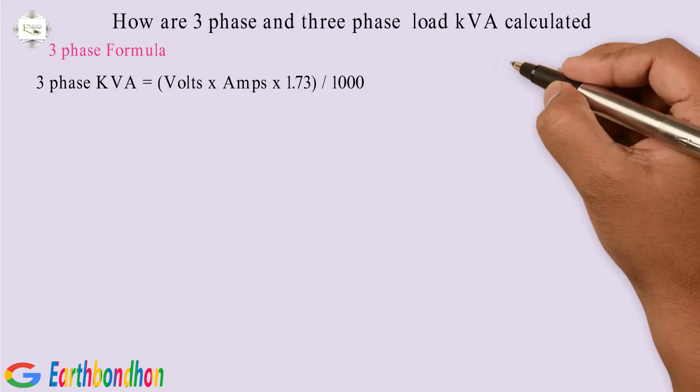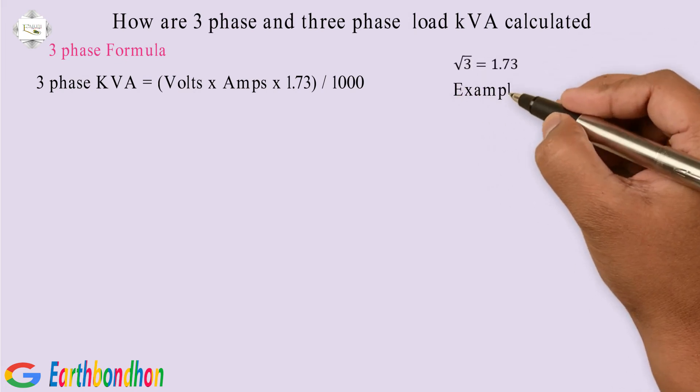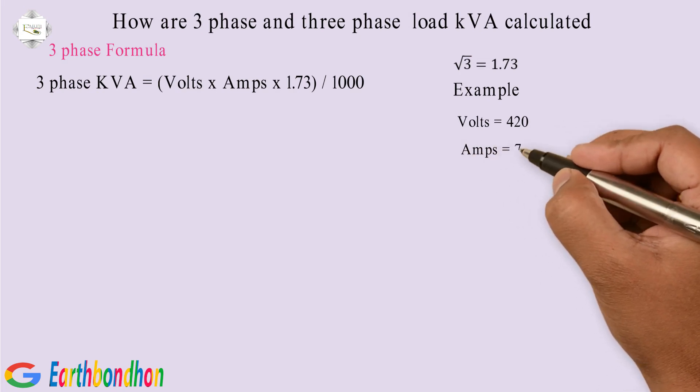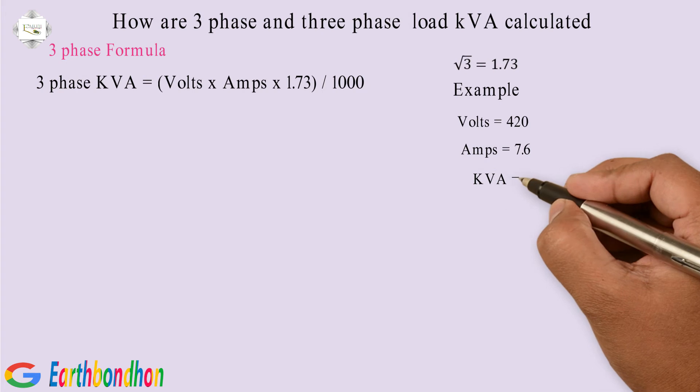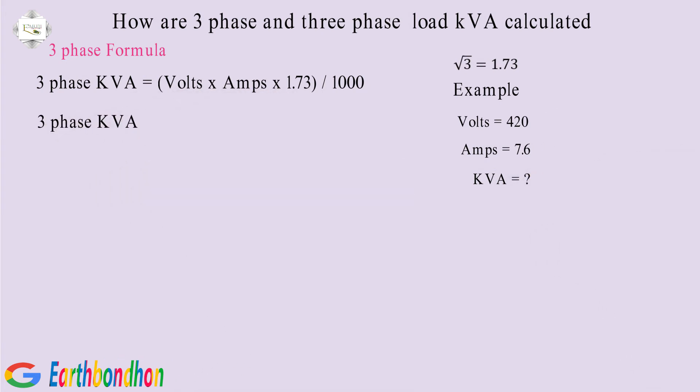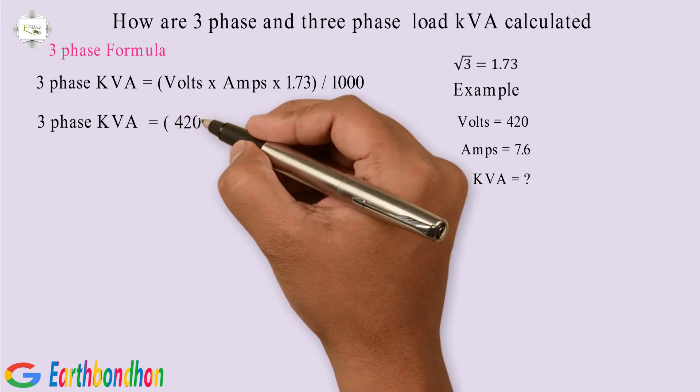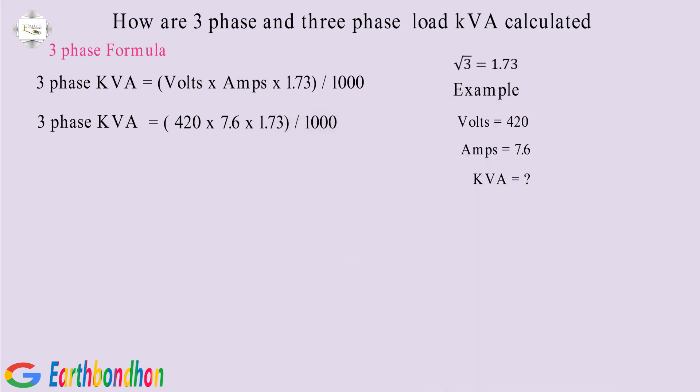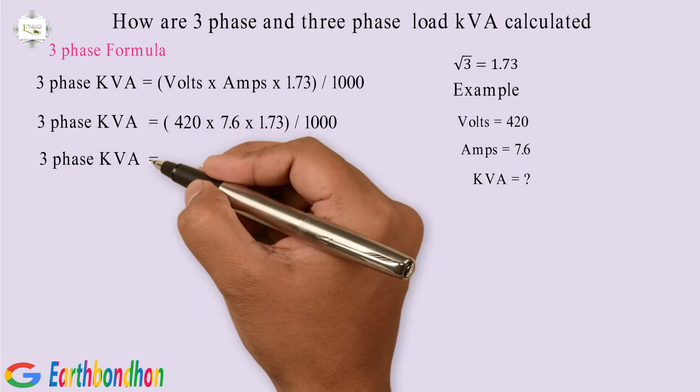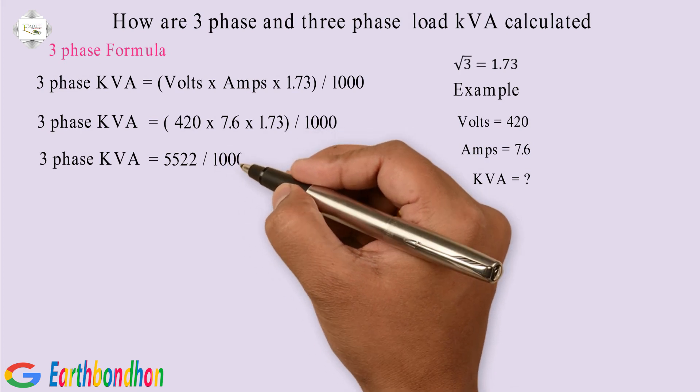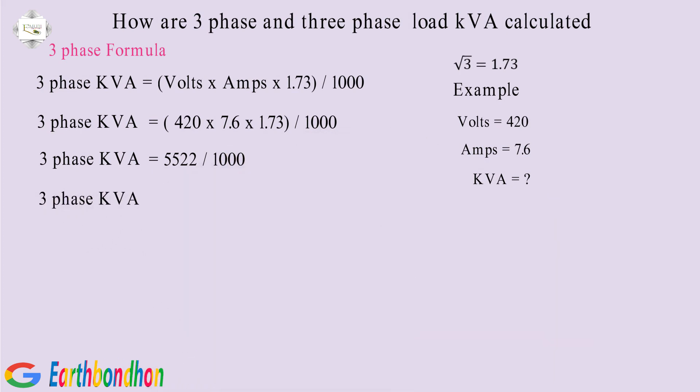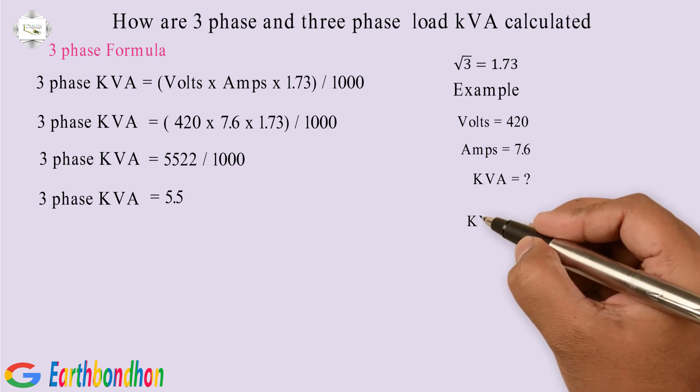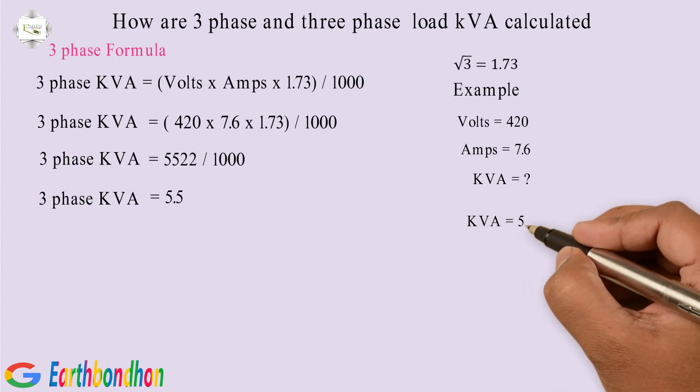Square root of 3 equals 1.73. Example: Volts equals 420, Amps equals 7.6, KVA equals question mark. Equals 420 multiplication 7.6 multiplication 1.73 division 1000. Equals 5522 division 1000. Equals 5.5. KVA equals 5.5.